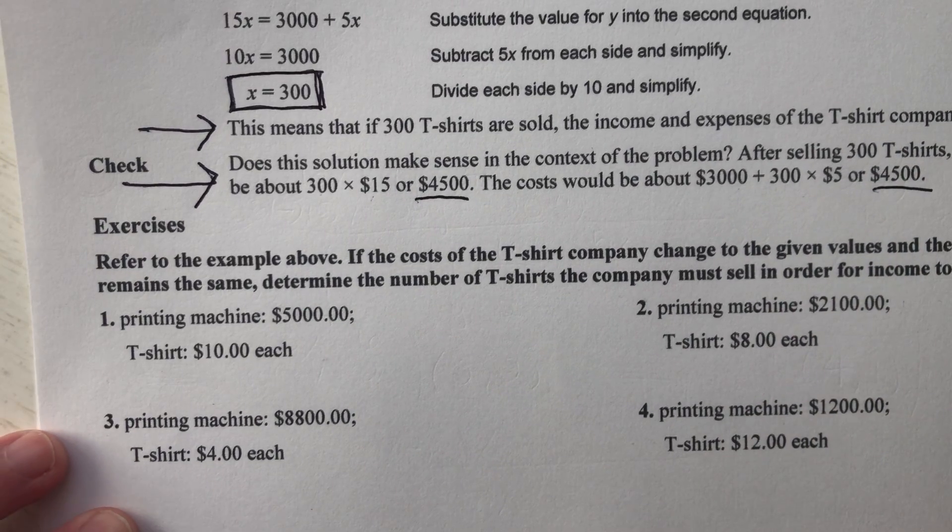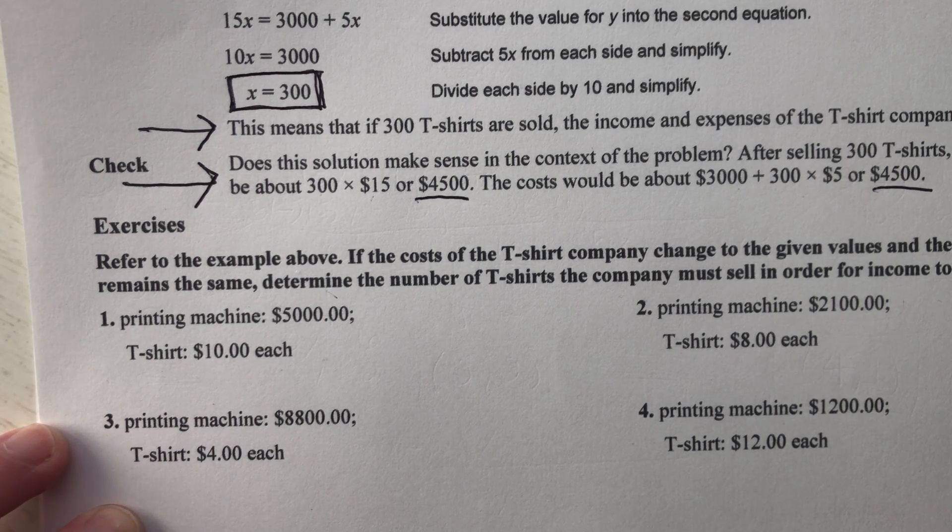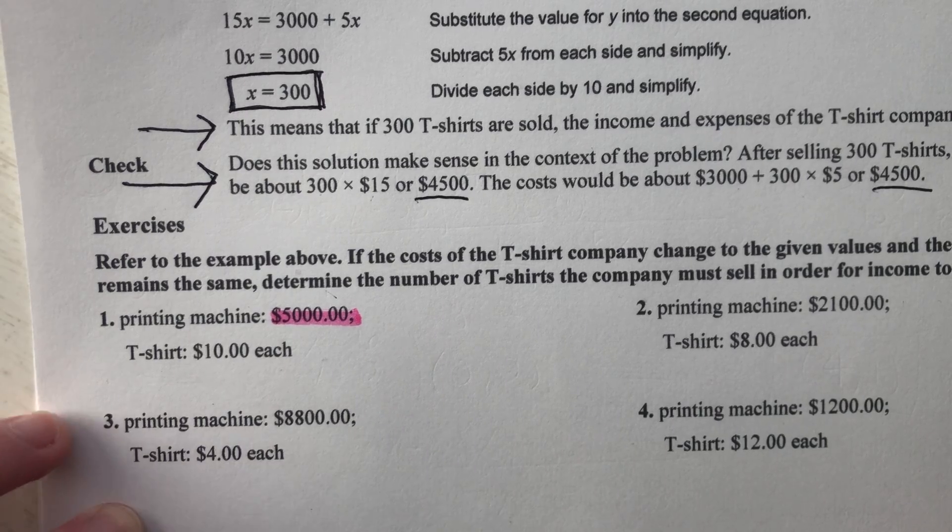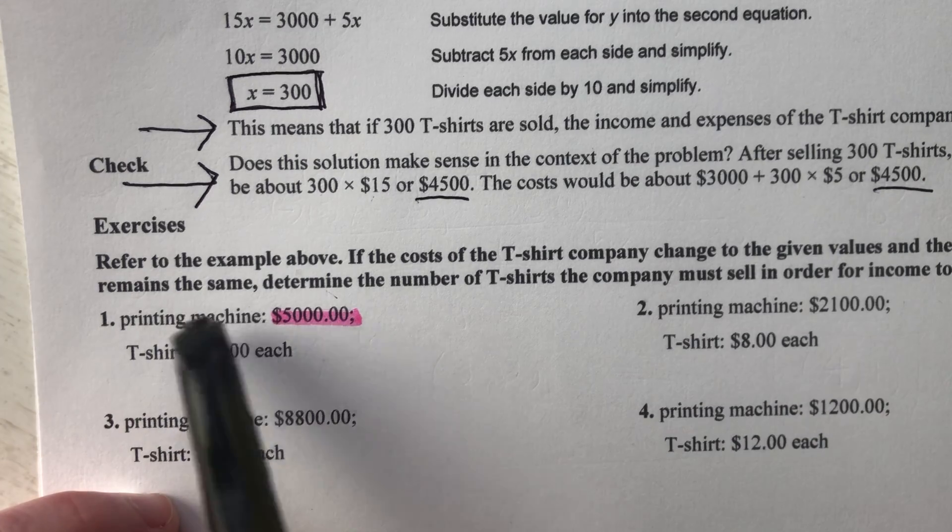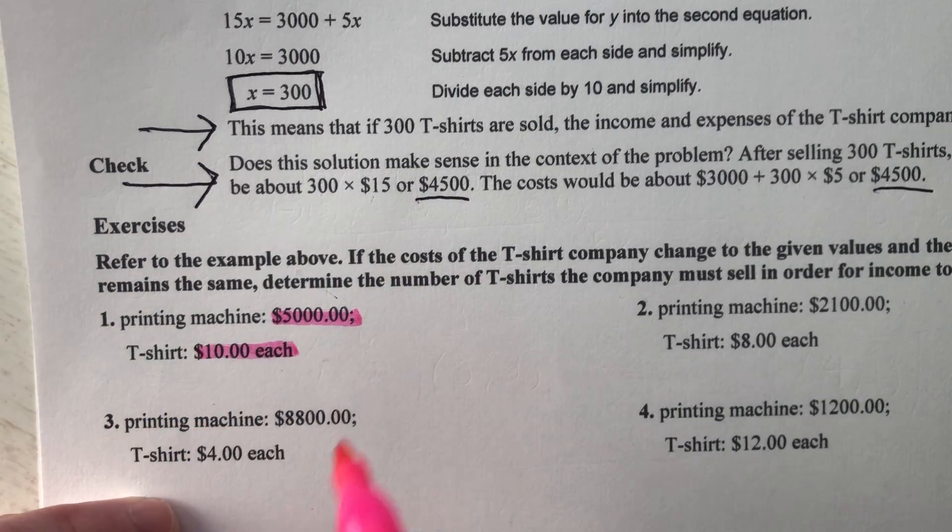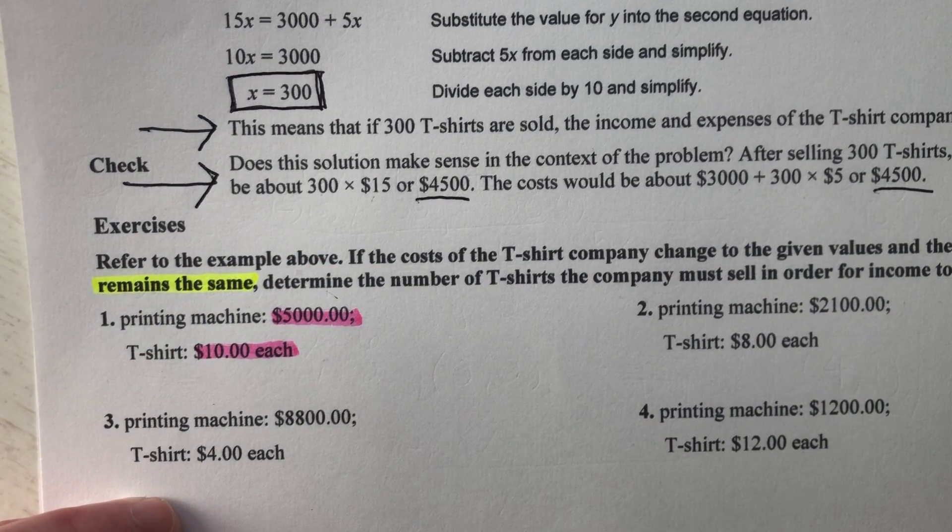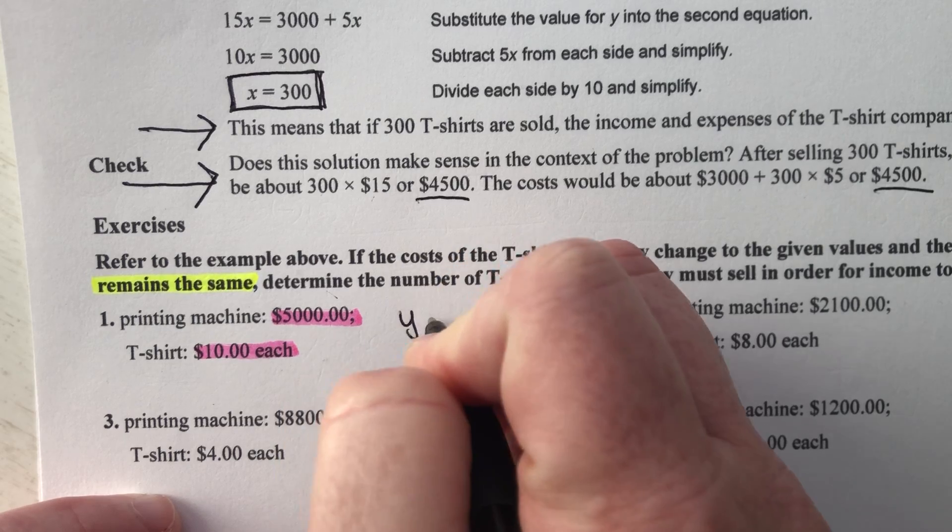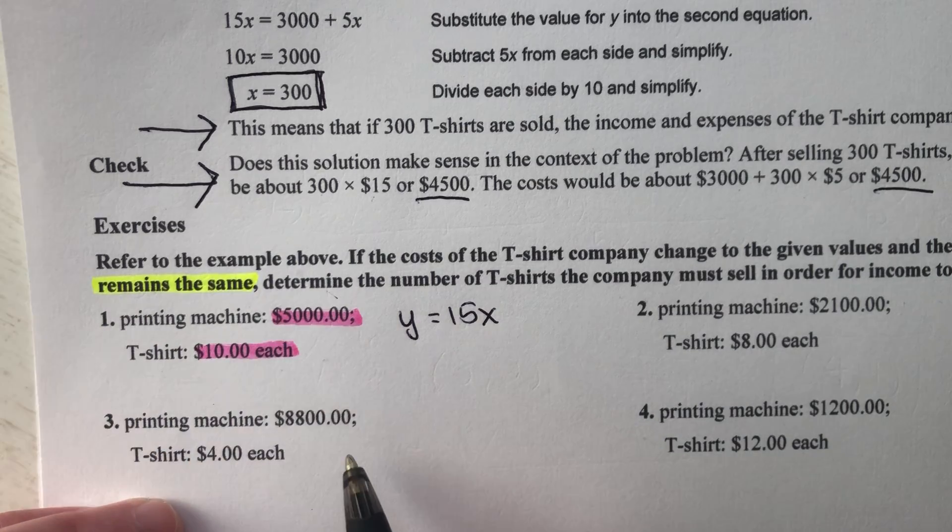So we're going to do it a couple more times. It's the same situation. There's a t-shirt company. They buy a machine. They make t-shirts. They sell the t-shirts. But the amount of money, the income and all is going to change. So here it says a printing machine costs $5,000. So everything else is the same. Printing machine costs $5,000. And the t-shirts are $10. The selling price remains the same. So the cost is $10 each instead of $5. It says the selling price remains the same. So the shirts are still $15 each.